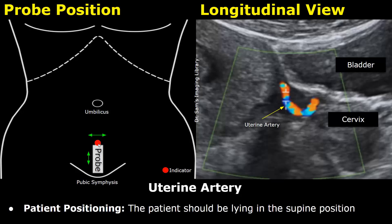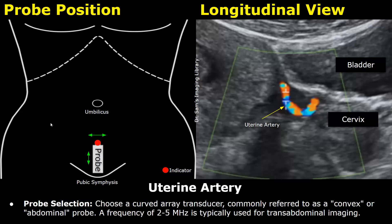The patient will be in a supine position. A curved array transducer, which is known as a convex or abdominal probe, is used for scanning the abdomen and pelvis with a frequency range of two to five megahertz.